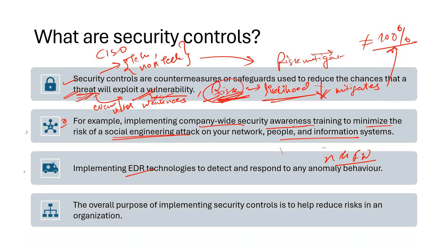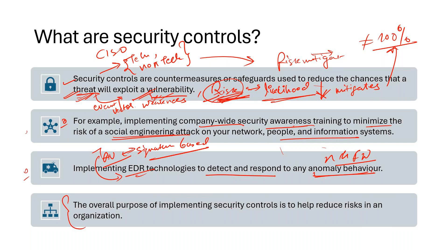Training is one security control. A technical security control would be implementing EDR technologies to detect, prevent, and respond to any anomalous behavior. In the past we used antivirus, which works on signature-based detection. Nowadays we have a combination of both AV and EDR technologies to detect anomalous behavior within the network — to up your game in terms of endpoint security and network security. The overall purpose of any security control, technical or non-technical, is to help reduce risk.